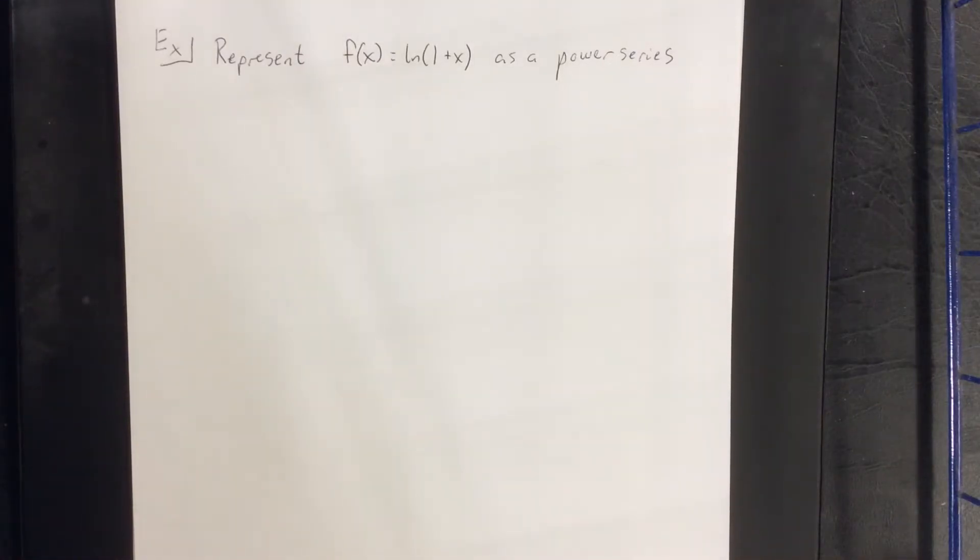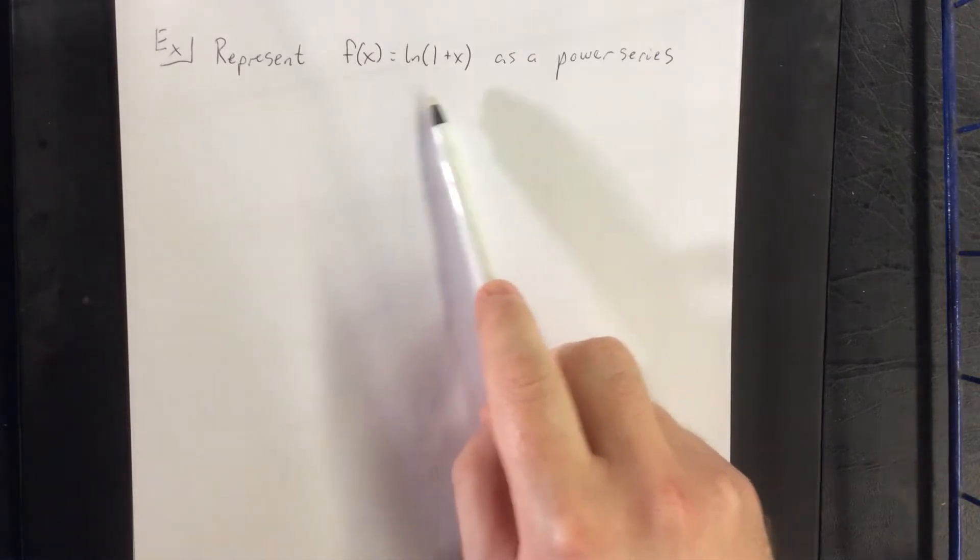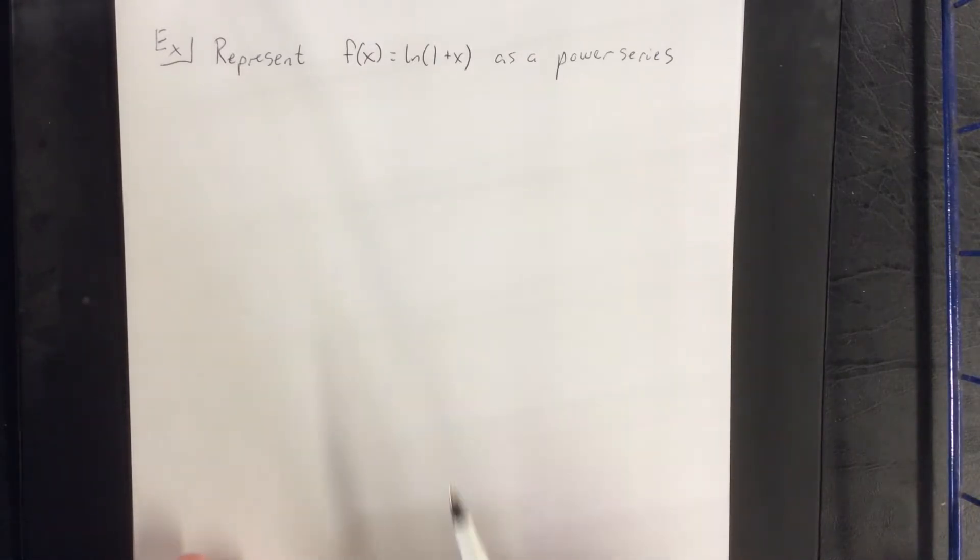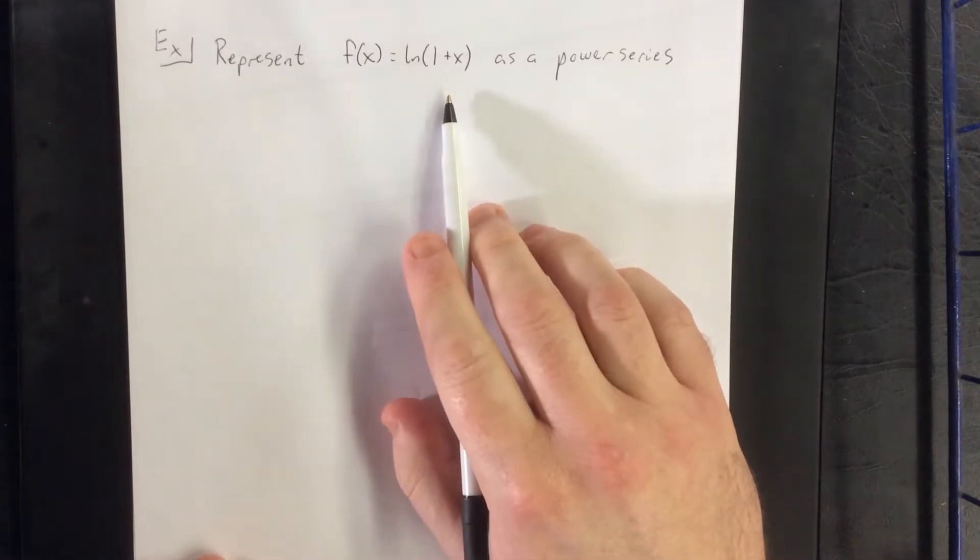In this example we're going to be representing the function f of x equals the natural log of 1 plus x as a power series. Now first thing that we need to point out is that this is definitely not in the appropriate form to convert to a power series due to the fact that it is not a rational expression.